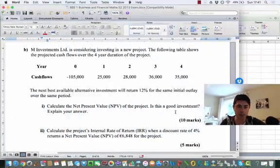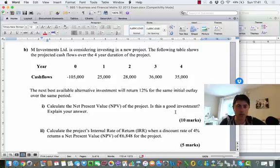So I'm going to look at a question here that we see on the screen. And it's for a project that has projected cash flows over a four-year period. And the cash flows here are represented in numbers from negative 105 to a positive 35,000 from year zero to year four.